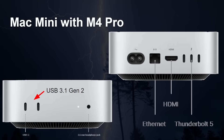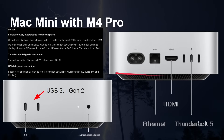Thunderbolt 5, Thunderbolt 4, and USB all use the same connector but have different capabilities. On the M4 Pro you can have up to three displays at 6K resolution using Thunderbolt or HDMI, or connect displays at 8K at 60Hz, or 4K at 240Hz. There are a whole bunch of different variations depending on what you're plugging in.